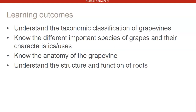The outcomes here: you should be able to understand the taxonomic classification of grapevines, know the different important species and their characteristics and uses, and know grapevine anatomy. Knowing these terms is going to help you as you progress in learning viticulture, because we're going to be using them in all the lectures from here on in.